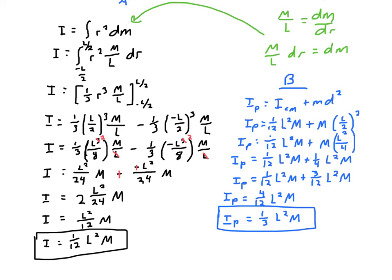Notice that when rotating about the end, the moment of inertia — one third ML squared — is higher than when rotating about the center of mass — one twelfth ML squared — because some mass chunks now have a much larger radius. Parallel axis theorem makes it very easy to find the moment of inertia about almost any other point, as long as it's a principal axis and it's parallel to the center of mass axis.